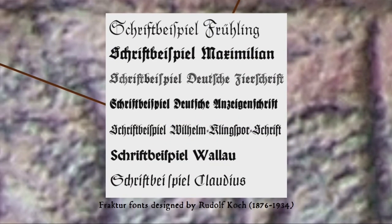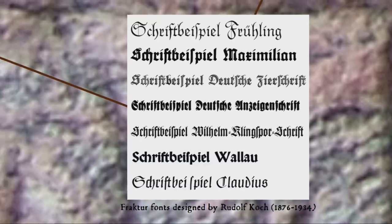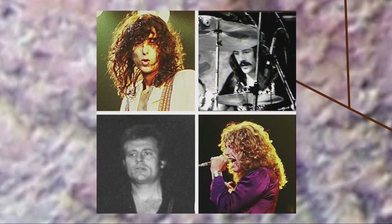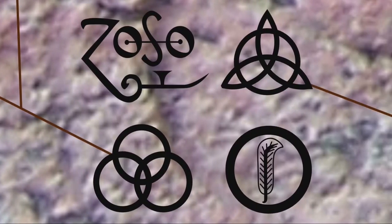The Nazis weren't the only ones to favour the Fraktur typeface. Many writers in the 19th and early 20th century expressed similar attachment to the script for German nationalist reasons, such as German type designer Rudolf Koch. In addition to typefaces, Koch was also interested in other graphic symbols, such as the old Germanic runes, and published a book on various old symbols, monograms, and runes called The Book of Signs. This book brought many of these old symbols and runes to pop culture notice, including to the attention of rock band Led Zeppelin, who used a couple of the symbols from the book on the cover of their fourth album, meant to represent the band members.